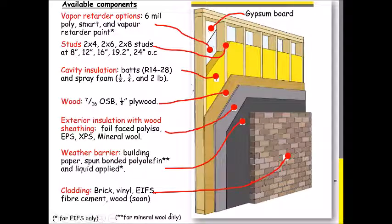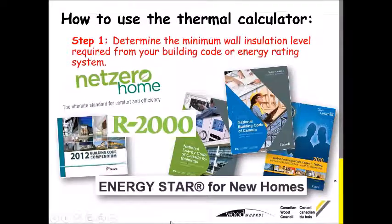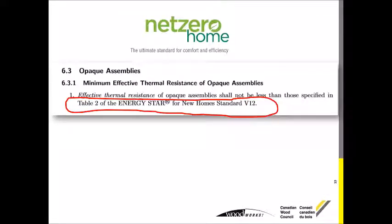At this point for cladding, we have brick, vinyl, eaves, and fiber cement. Wood siding is days away from being added to the tool. To give a quick rundown on how to use the thermal calculator: step one is to determine what your minimum wall insulation level is for your building code or energy rating system. If we're focused on net-zero homes, for example, you'd select something at least as good as Table 2 of the ENERGY STAR for new homes.